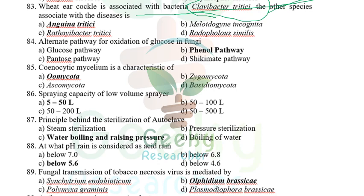Vtyococcal (ear cockle of wheat) is associated with the nematode Anguina tritici and the bacterium Clavibacter tritici (otherwise called Rathayibacter tritici). Anguina tritici is the first plant parasitic nematode discovered by Needham in 1743.